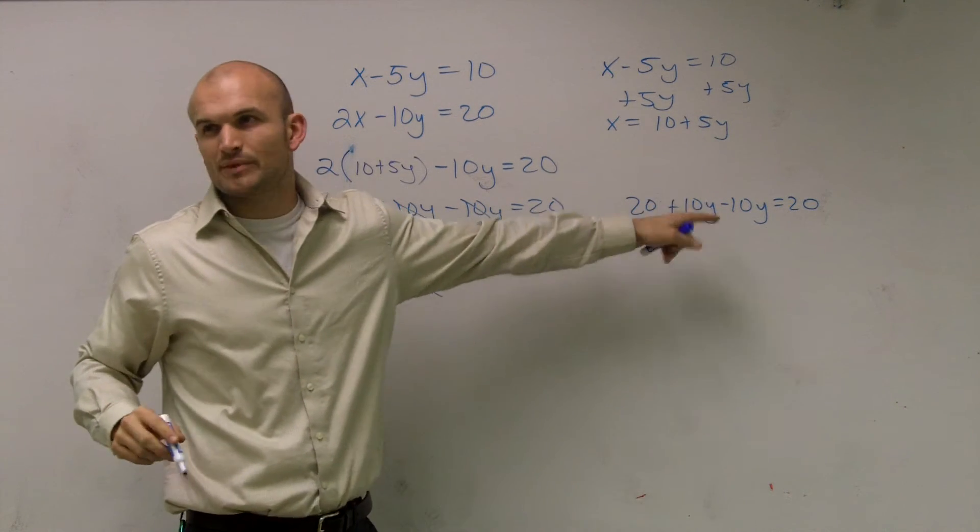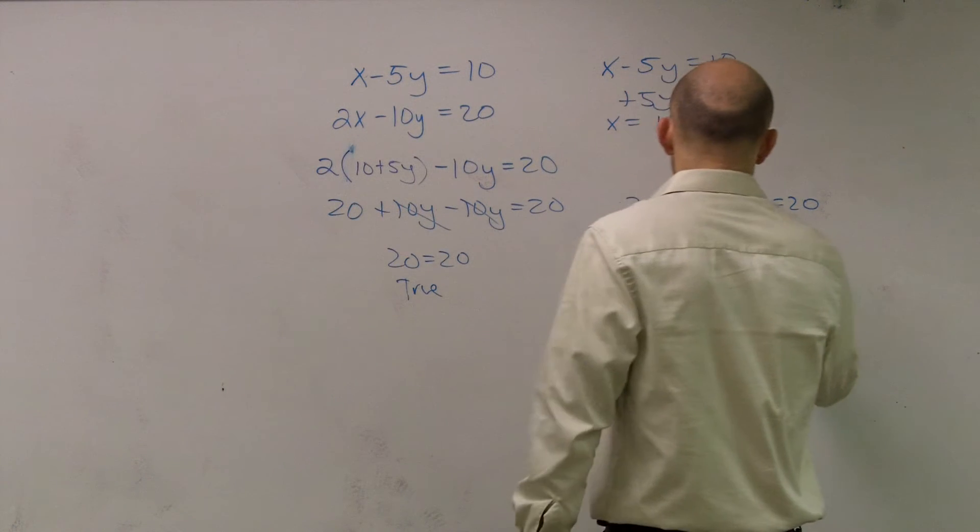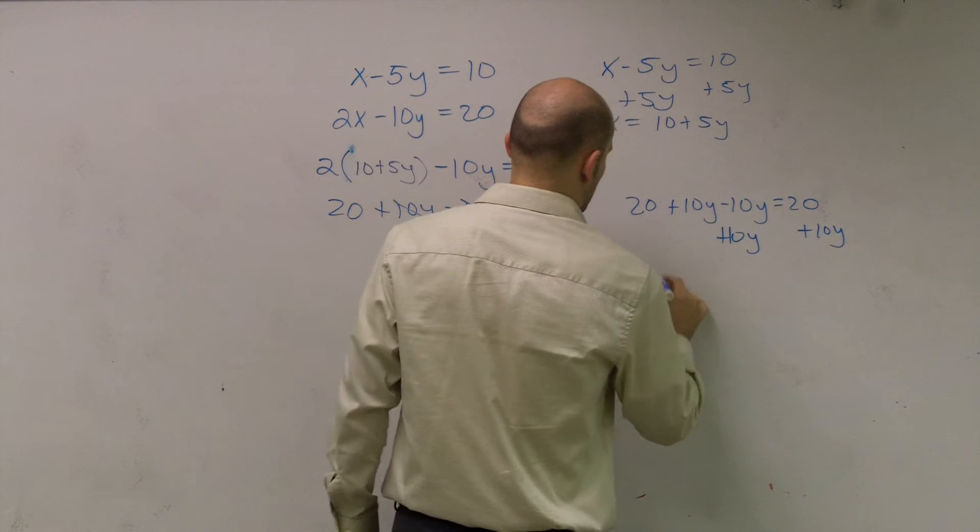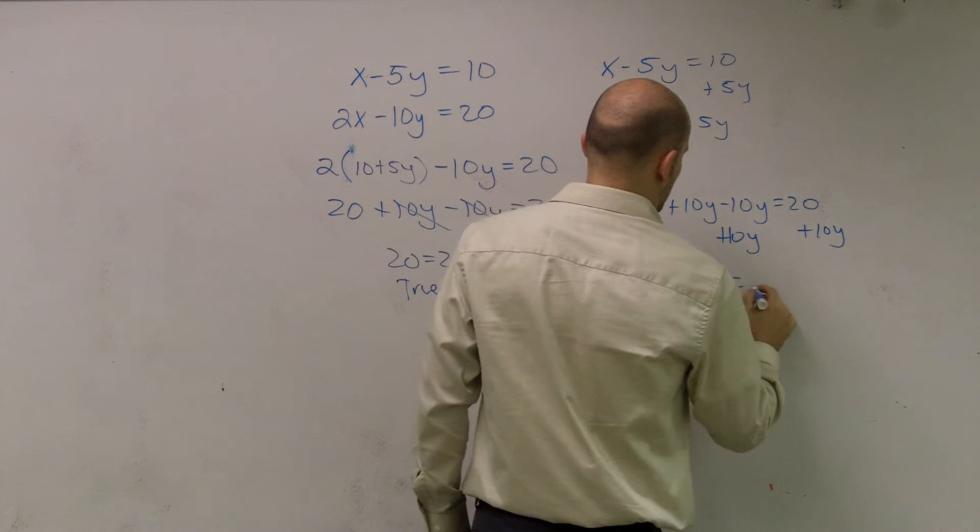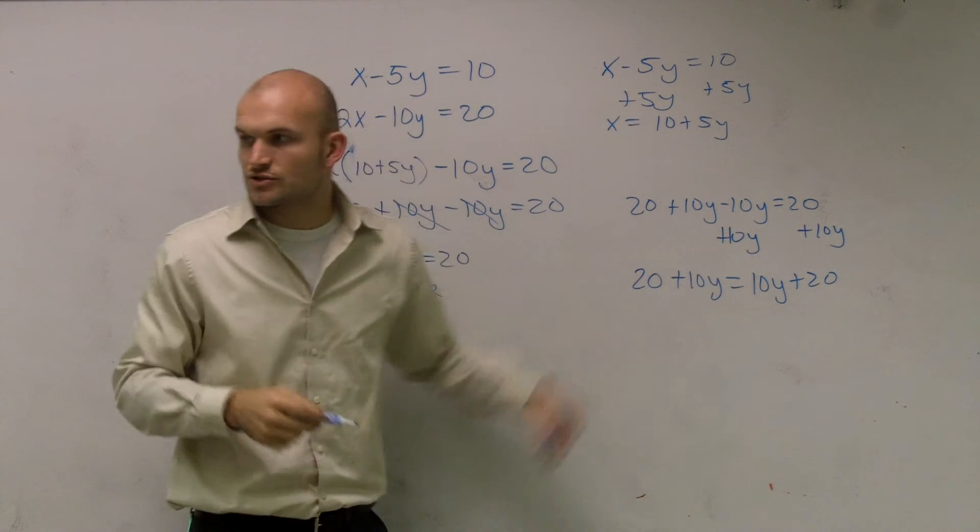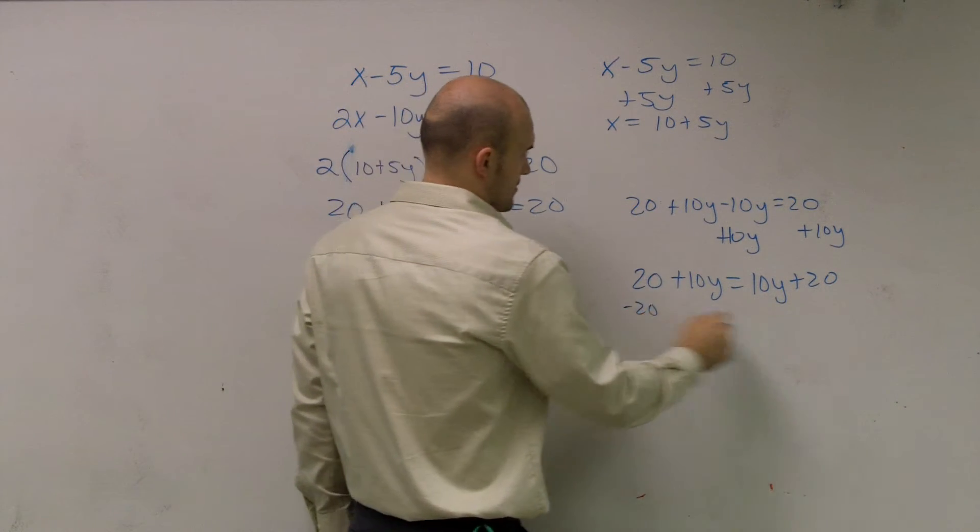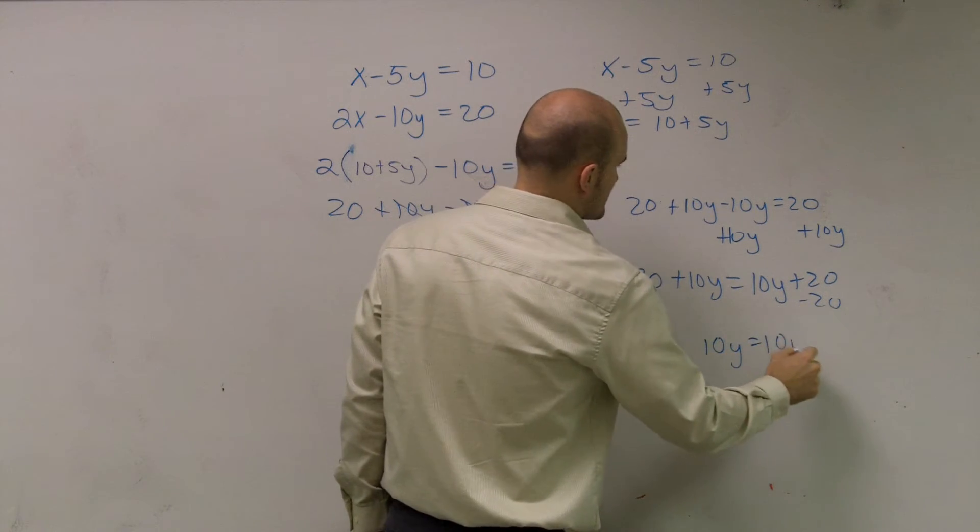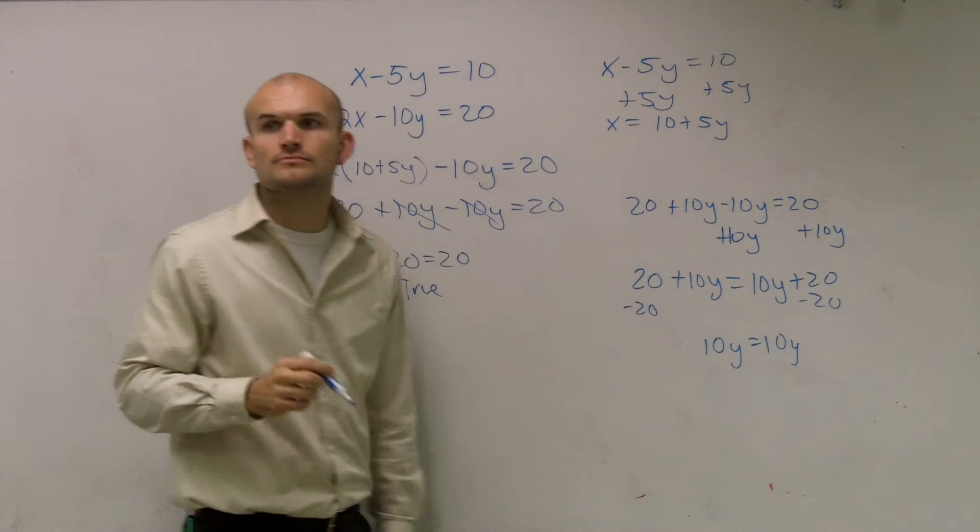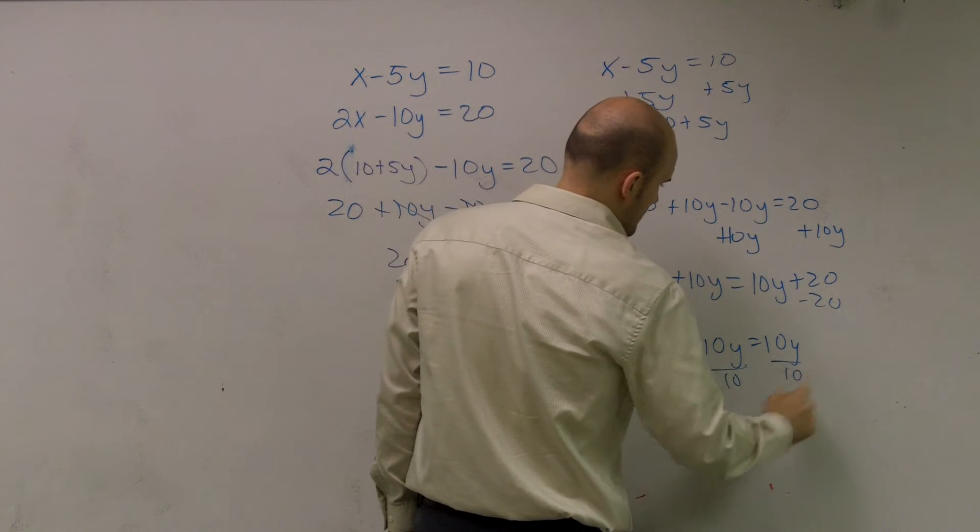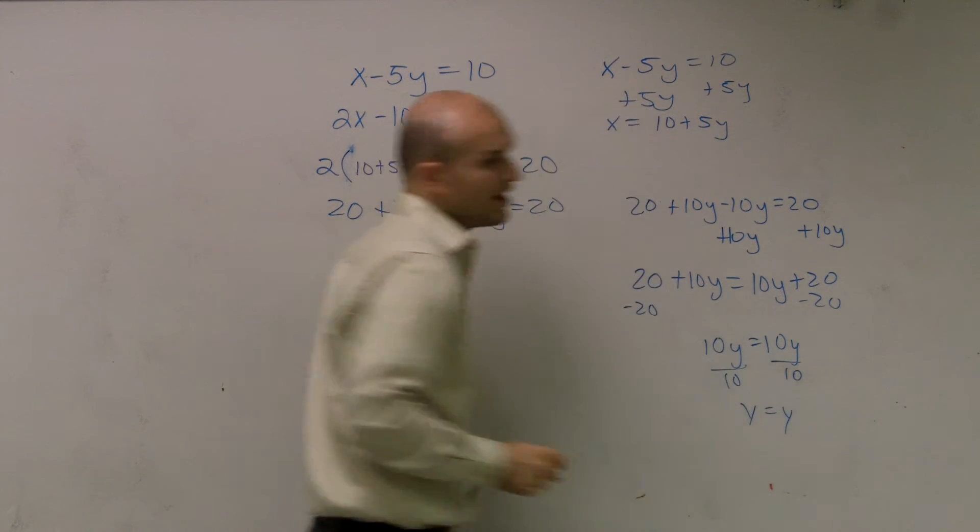Also to know is, let me just manipulate this a little bit. Let me add the 10y over to this side. And then let me subtract the 20 on both sides. Therefore, what you guys get is 10y equals 10y. Divide by 10 on both sides. And I get y equals y.